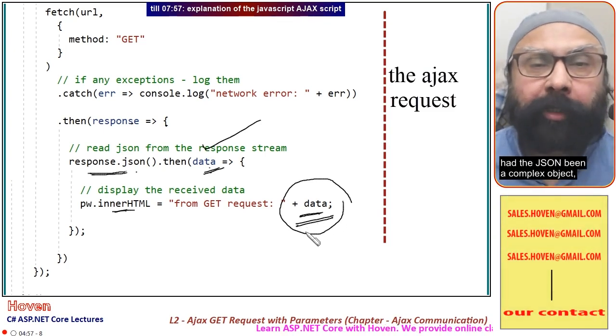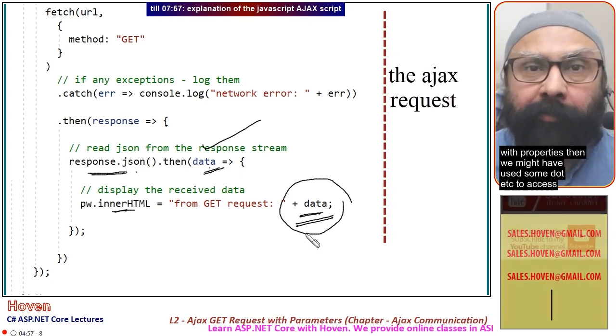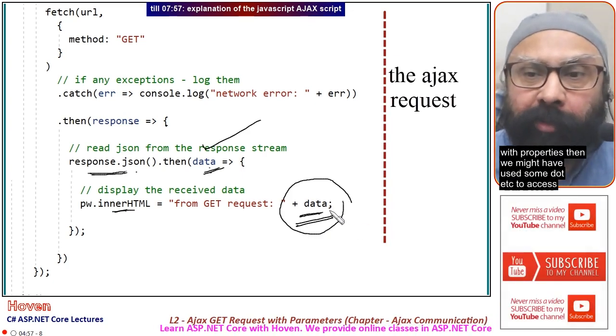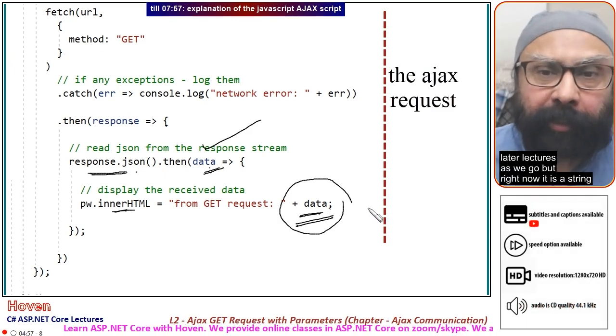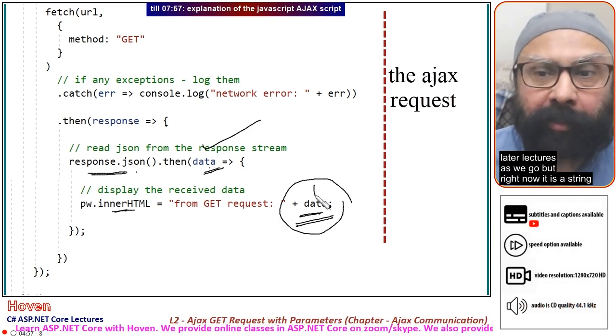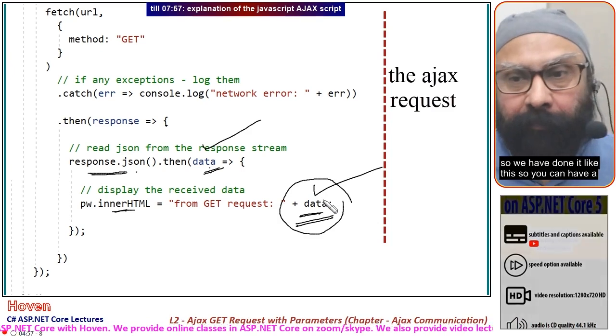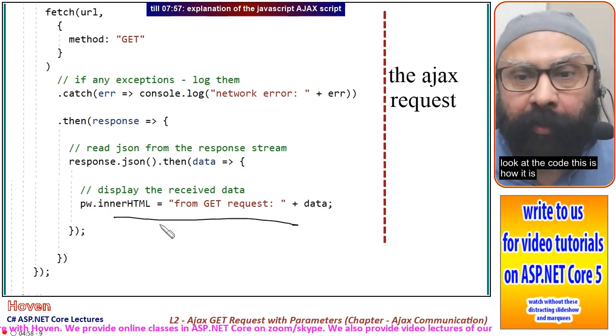This is the decoded JSON. The JSON will be a string, so we've used it as a string. Had the JSON been a complex object with properties, we might have used dot notation to access those properties. We'll cover that in later lectures.